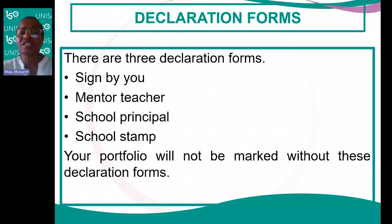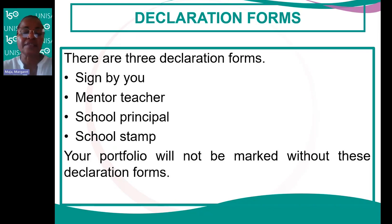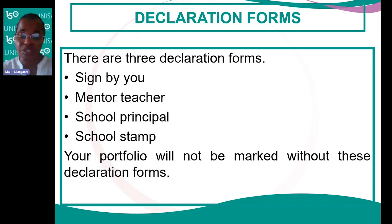There are three declaration forms in this portfolio. You need to sign these three declaration forms yourself, and the mentor teacher, the school principal, and the school stamp should be there. If the school principal is not available, the HOD, deputy principal, or whoever is in charge can assist. Remember that your portfolio will not be marked without these declaration forms — their absence indicates you were not at school for teaching practice.